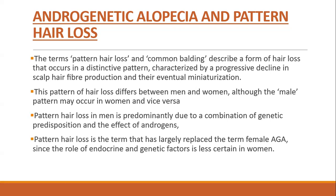Pattern hair loss in men is generally a combination of genetic predisposition and the effects of androgen. It is almost known that a bald male will have a son who will be bald, so genetics play a large role in androgenetic alopecia. Pattern hair loss is the term that has largely replaced female androgenetic alopecia, since the role of endocrine and genetic factors is less certain in women. In men, hair loss is almost certainly due to increased androgen sensitivity and genetic susceptibility.